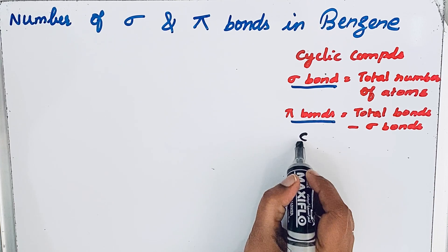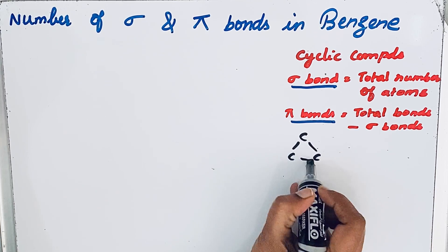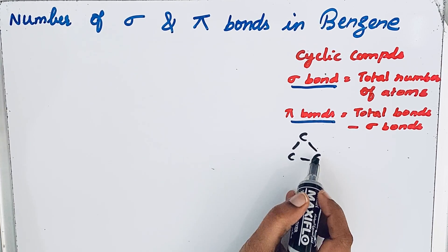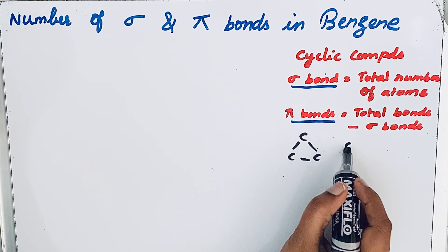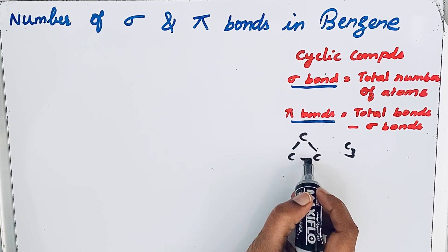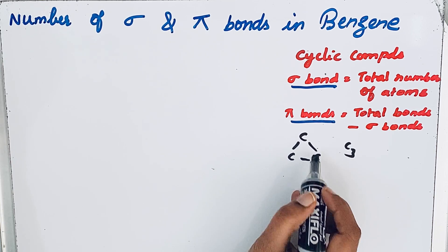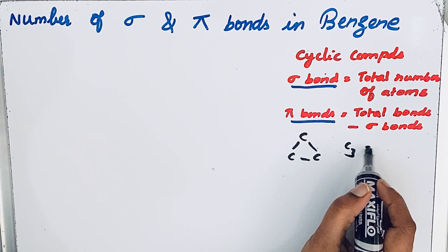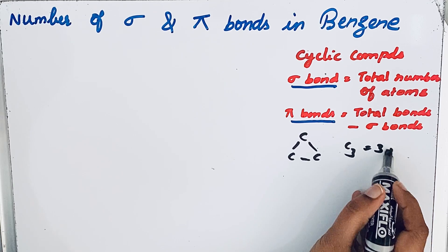For example, if you think that this is a cyclic compound, we have three carbon atoms. That means you see one, two, three - three single bonds, that is sigma bonds are present. Three carbon atoms means three sigma bonds.